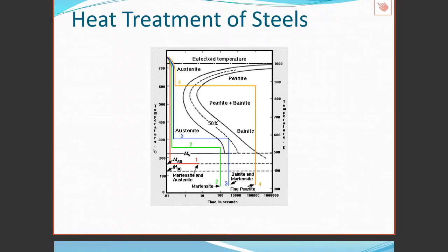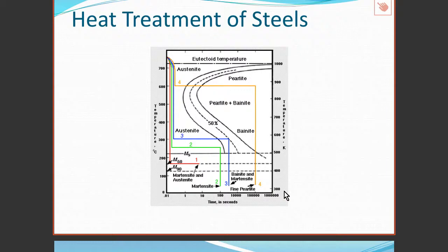An important process when working with steels is heat treatment, and an important type of diagram for designing heat treatments is the time-temperature transformation curve. Here we have time on the horizontal scale in seconds on a logarithmic scale, and temperature on the vertical axis, in this case in centigrade.